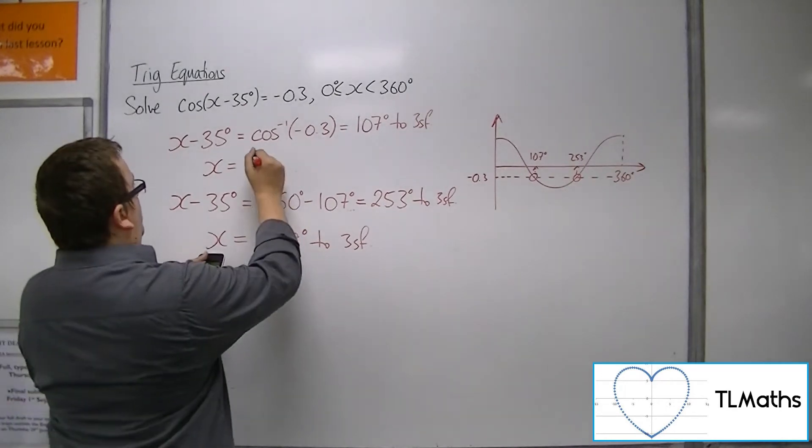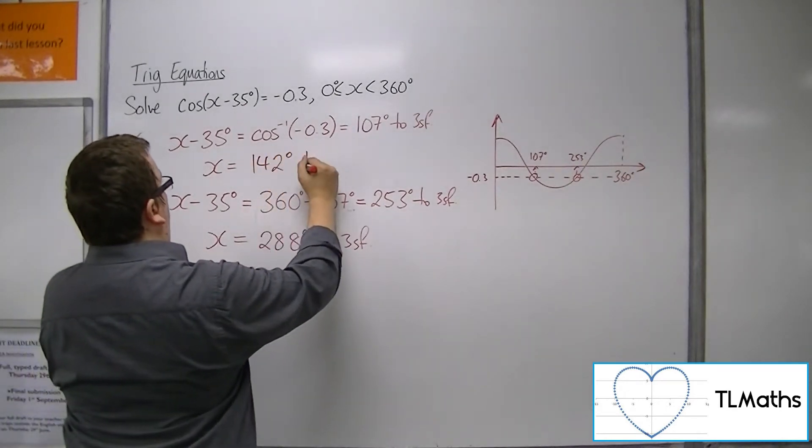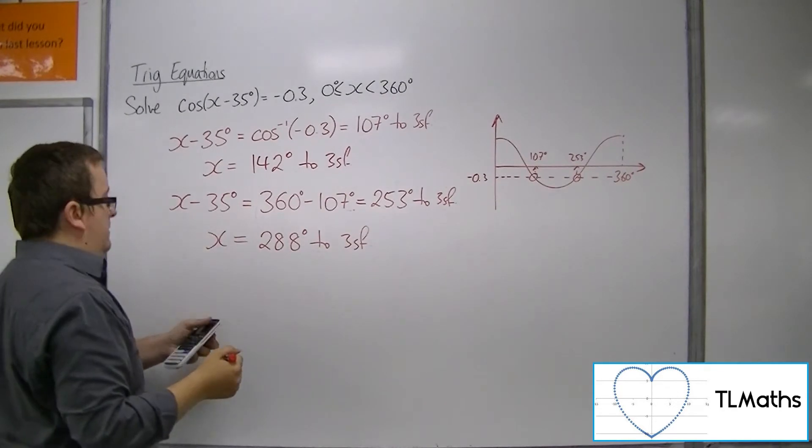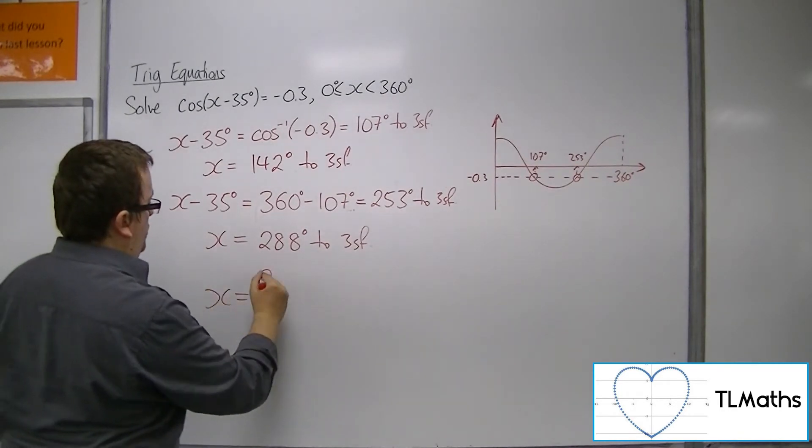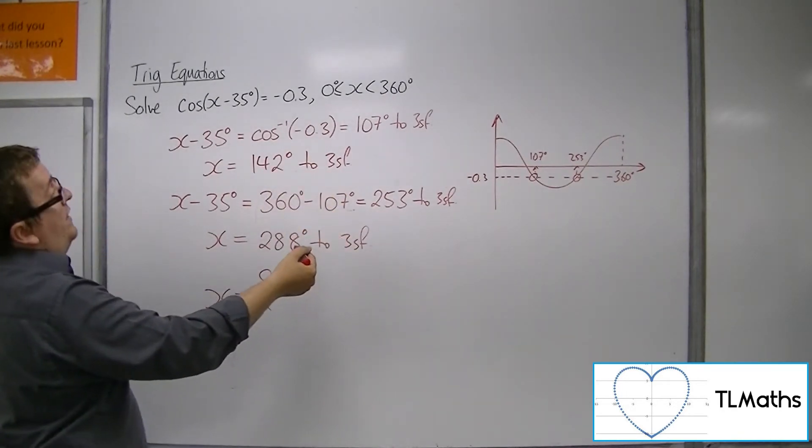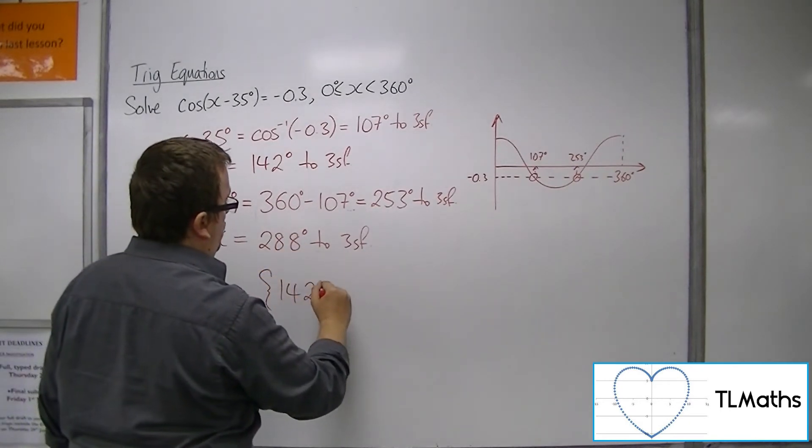And we get 142 degrees to 3 significant figures up there. So the two solutions, and because they're both within 0 to 360, they are the two solutions I want.